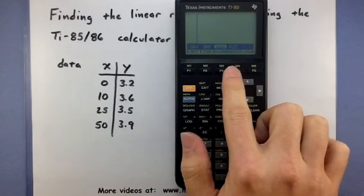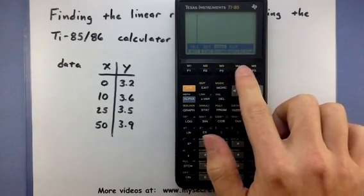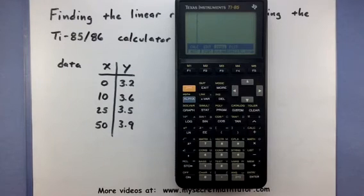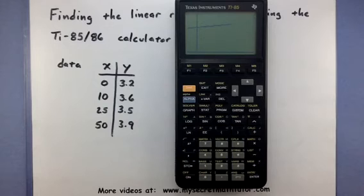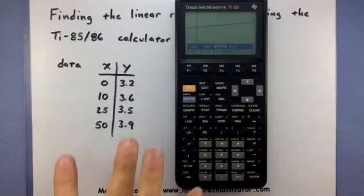But now we have this option DRREG, which stands for Draw Regression. Press F4, and it will draw that regression line. As you can see, the regression is actually a pretty good fit. So there you go, you can build the regression line for your data.